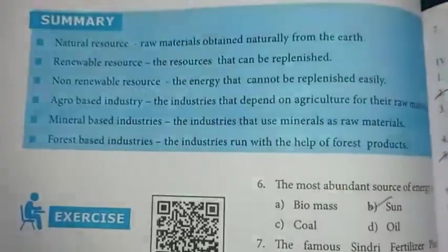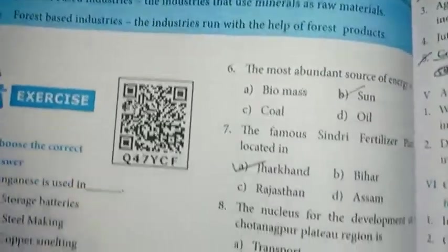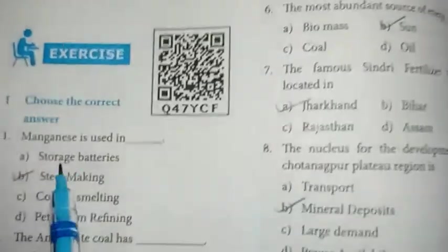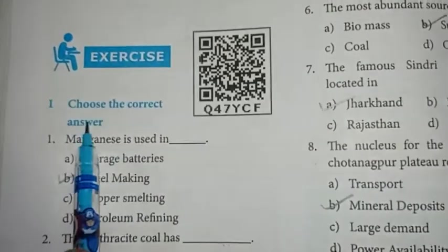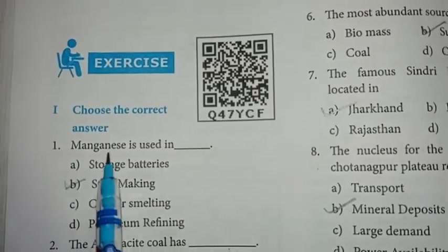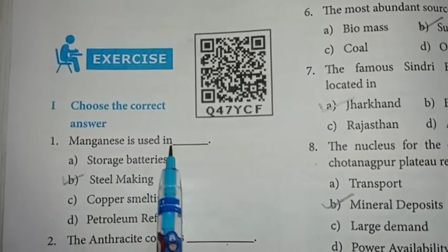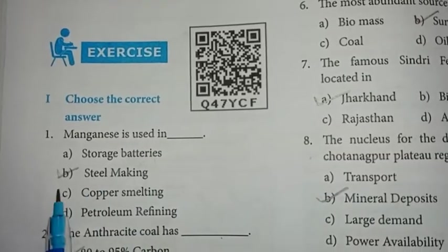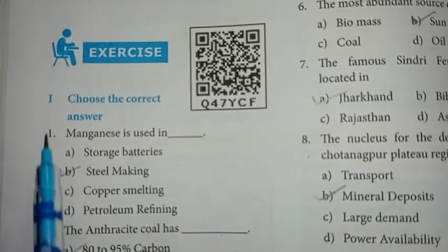In the lesson, book back exercises starting at page 184, Roman number 1 - choose the correct answer. First one: manganese is used in steel making. Option B is the right answer.